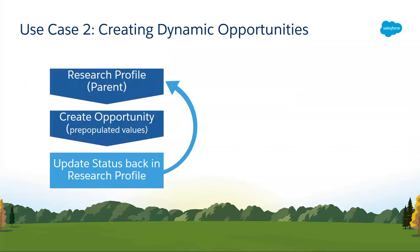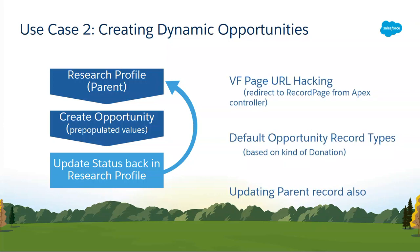Now for a more complex use case. Let's say I have a parent object called Research Profile where we capture all our donor information — their background, motivations, and so on. When they are ready to donate, I want to create an Opportunity out of it with all values pre-populated from the parent object. Not only that, I also have to update the status back in the Research Profile to indicate they are now ready to donate. In Classic, I had JavaScript calling a Visualforce page, which called an Apex controller and did the URL hack — populating all field IDs directly, then invoking the Opportunity. Since URL hacks don't work in Lightning, we went with Lightning Actions.